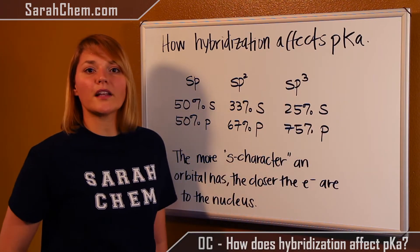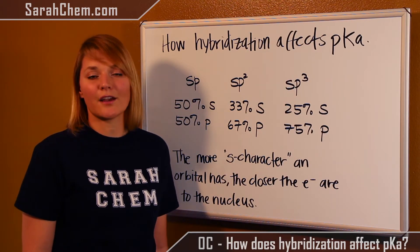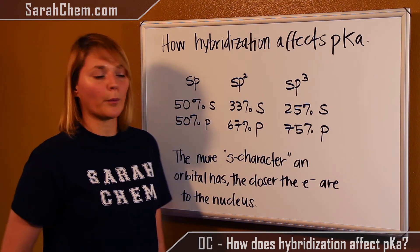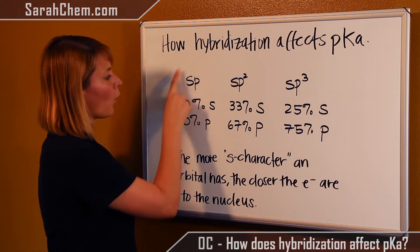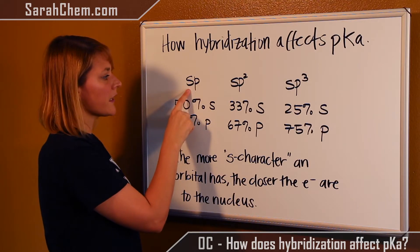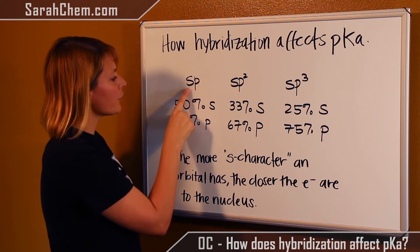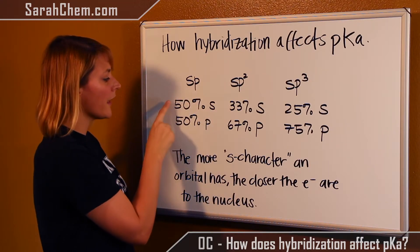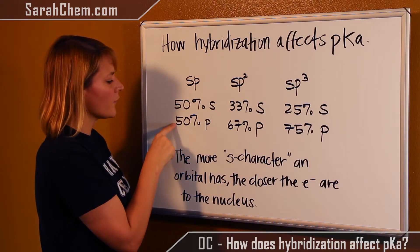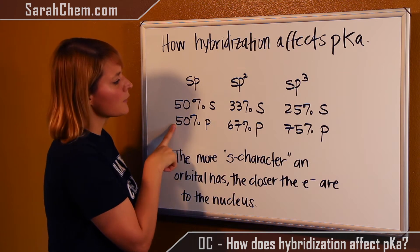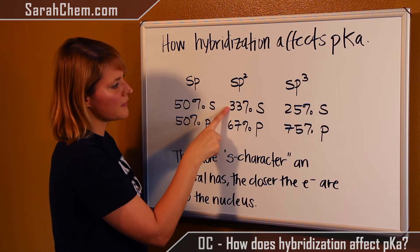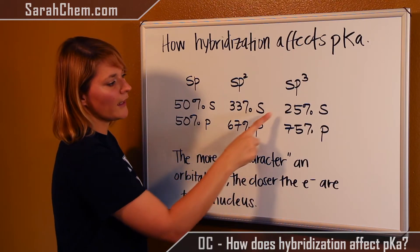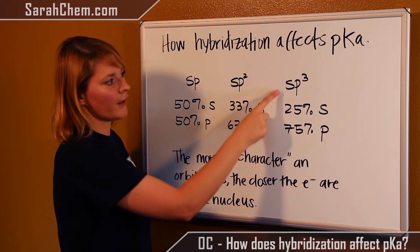The important point about each one of these is how much s character they have. To determine the s character of an orbital, we figure out what percent of the orbital is s and what percent is p. For sp, one out of two orbitals is s, so it's 50% s and 50% p. Applying those same principles, we get 33% s and 67% p for sp2, and a 25-75 split for sp3.